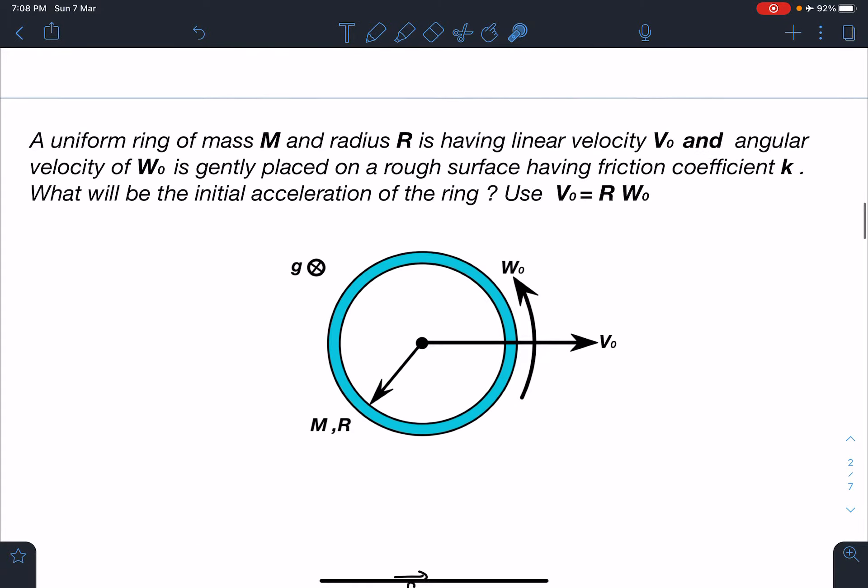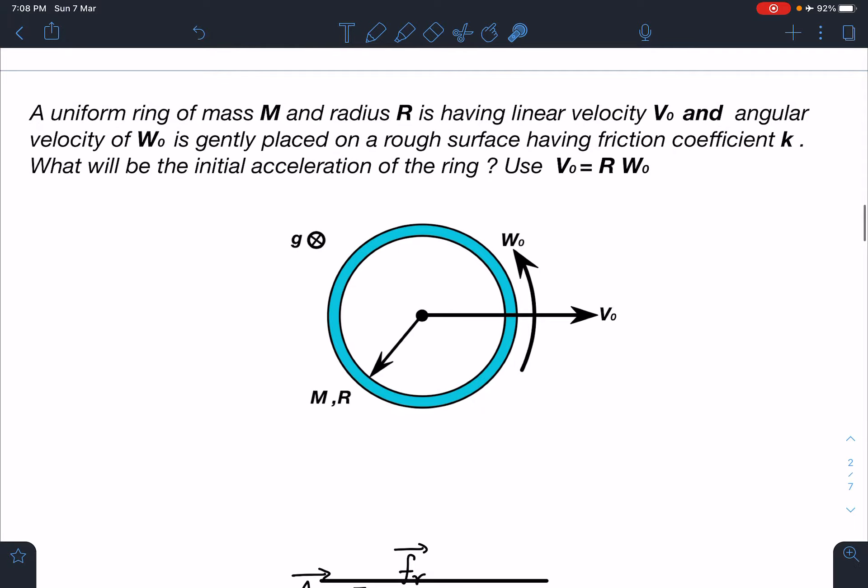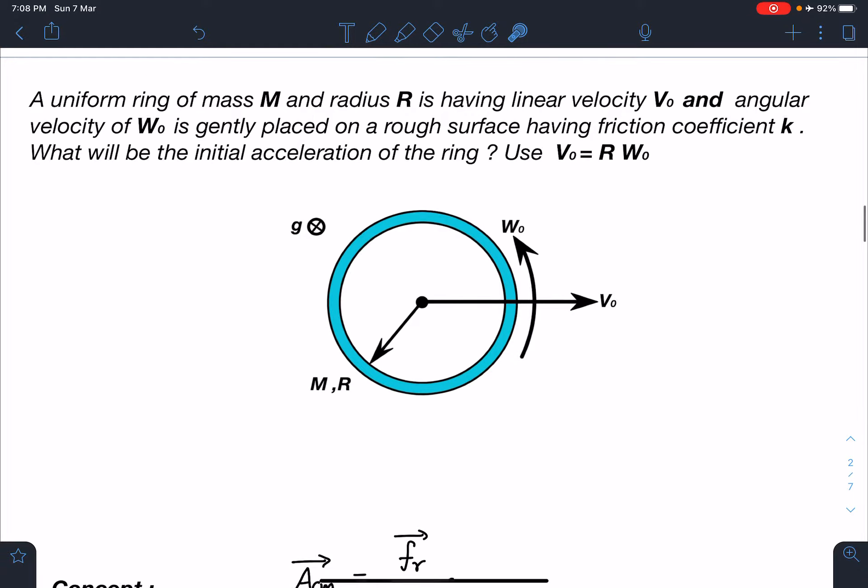Here is the statement of this problem: A uniform ring of mass M and radius R is having linear velocity V₀ and angular velocity of ω₀. It is gently placed on a rough surface having friction coefficient k or μ. What will be the initial acceleration of the ring? It is given V₀ is equal to R ω₀.